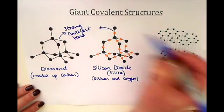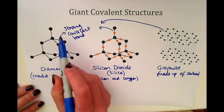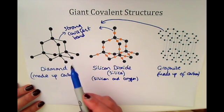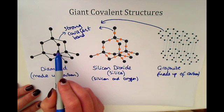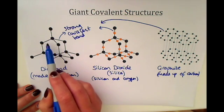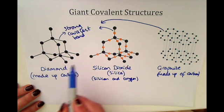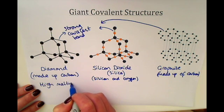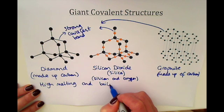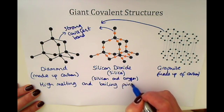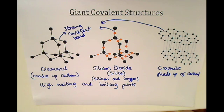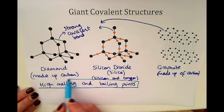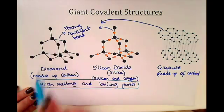The same applies for graphite — a single line represents a strong covalent bond. You should be able to look at these structures and recognize that they are giant covalent structures. Because they have strong covalent bonds throughout, they have very high melting and boiling points — unlike simple molecules like oxygen, chlorine, and ammonia, which have very low boiling points.